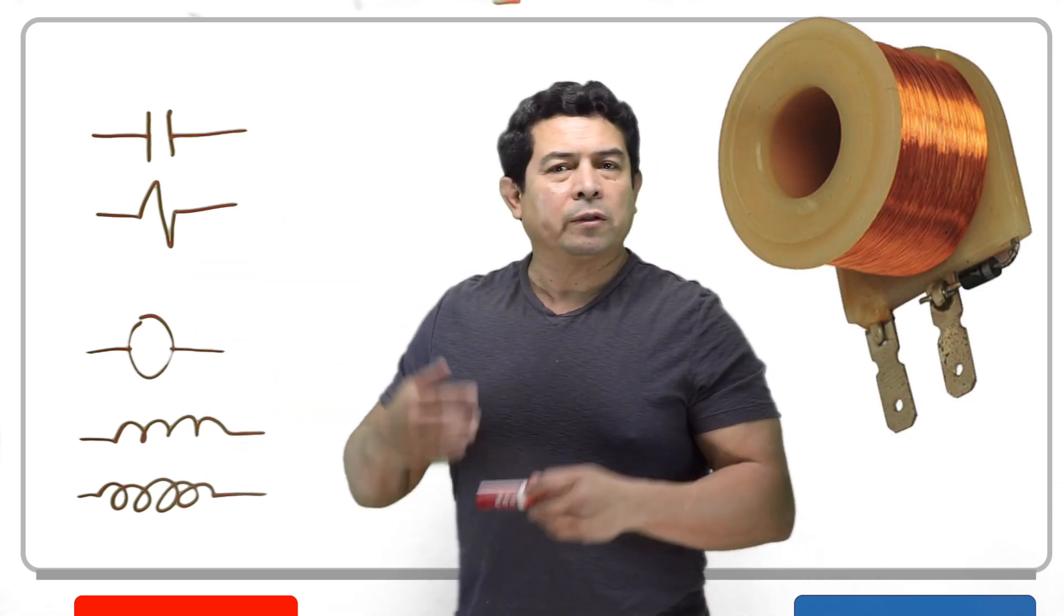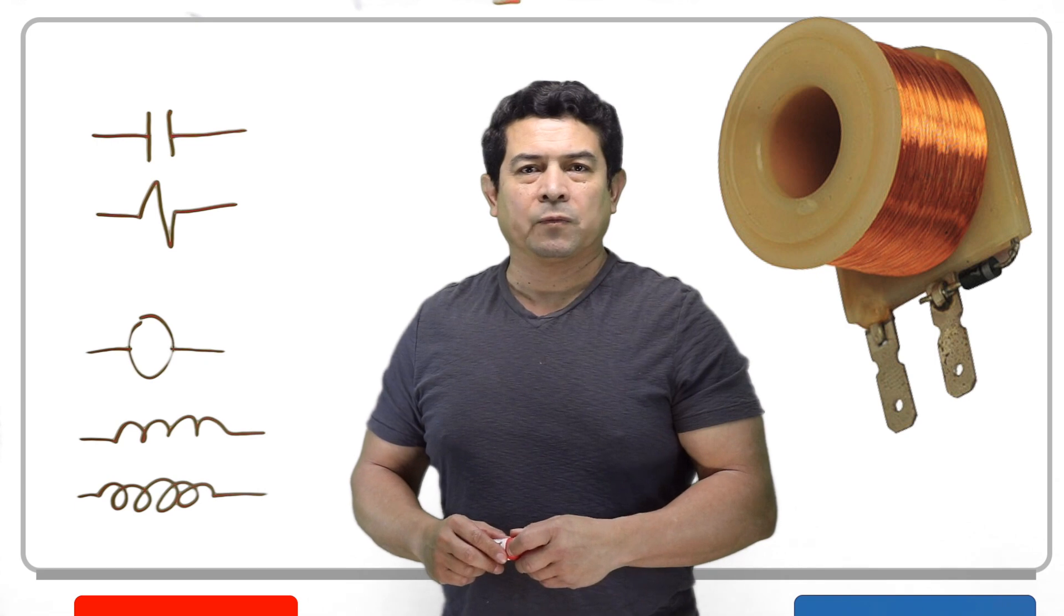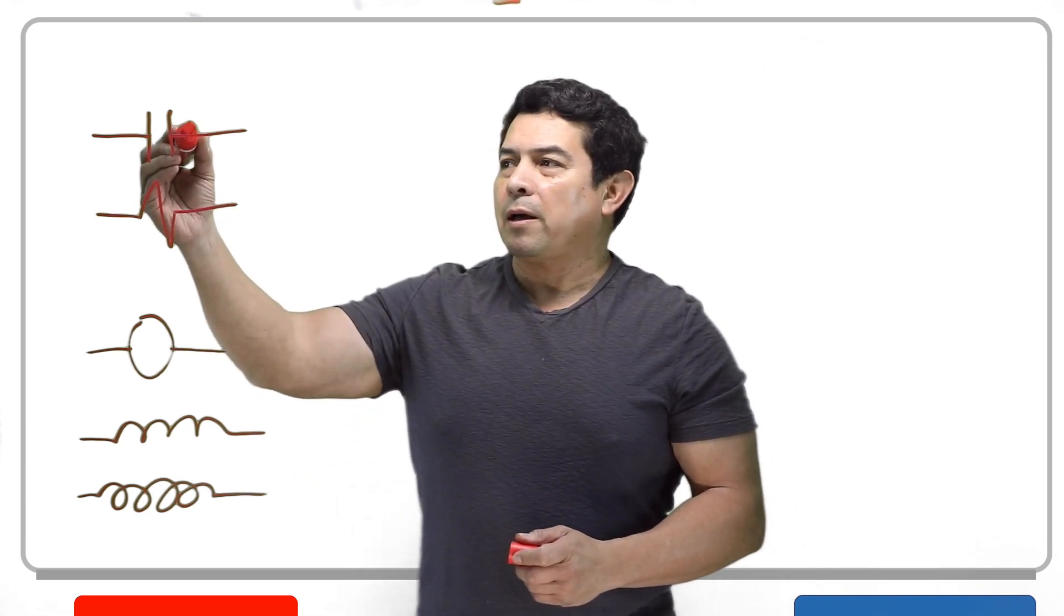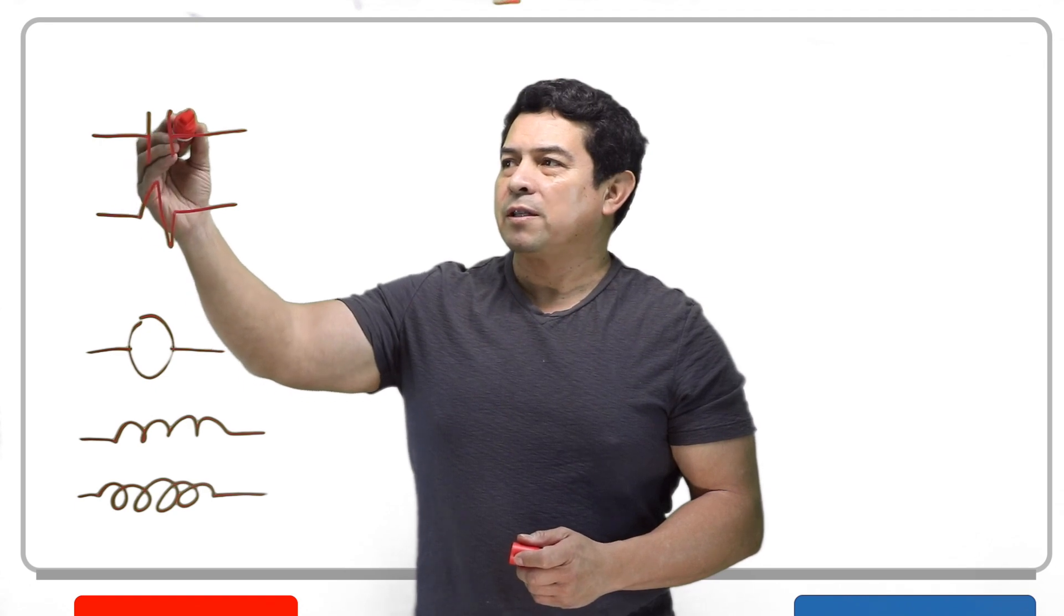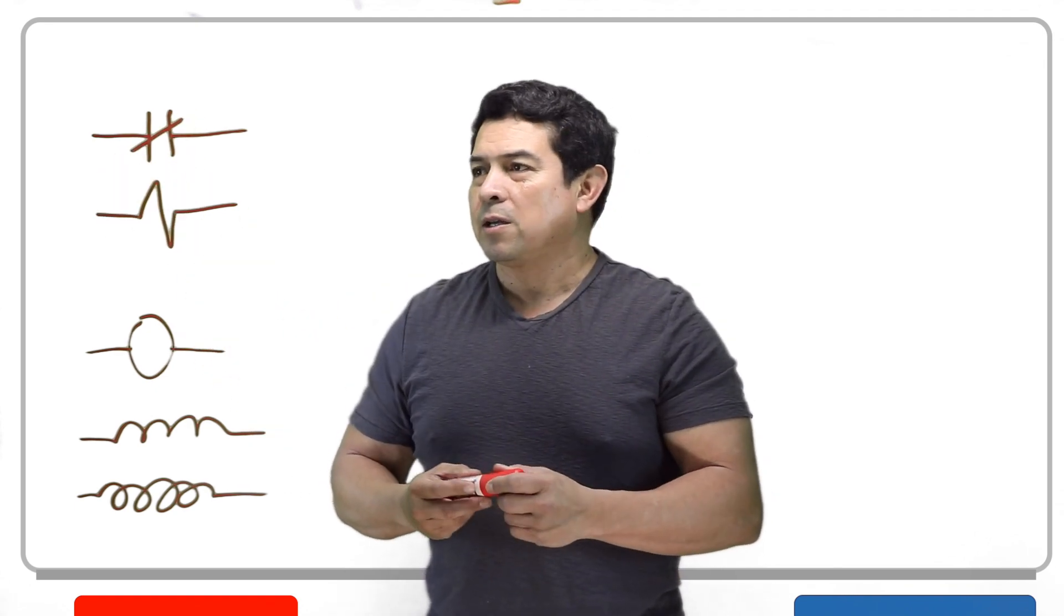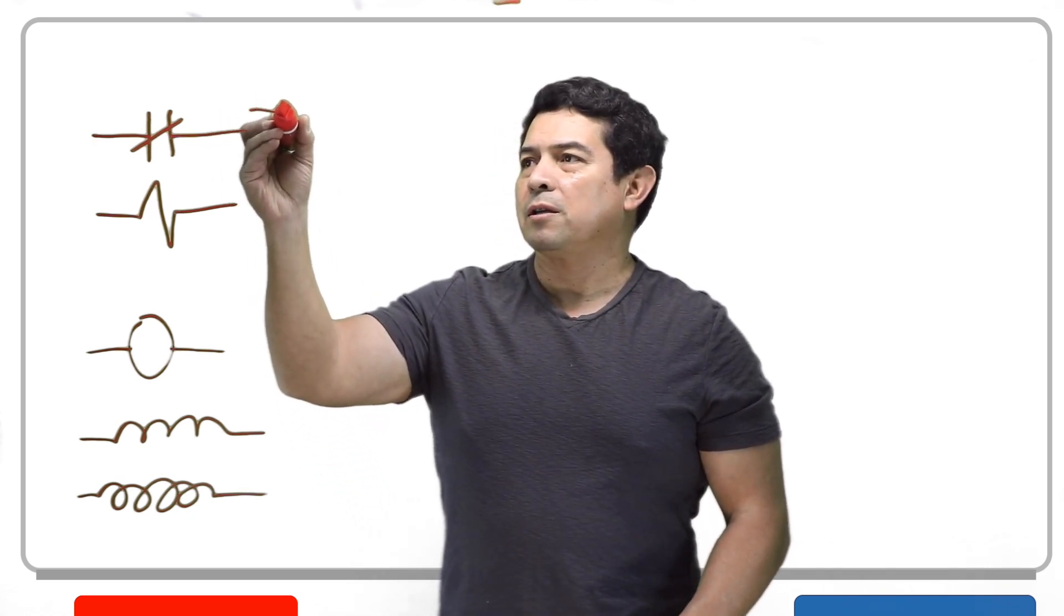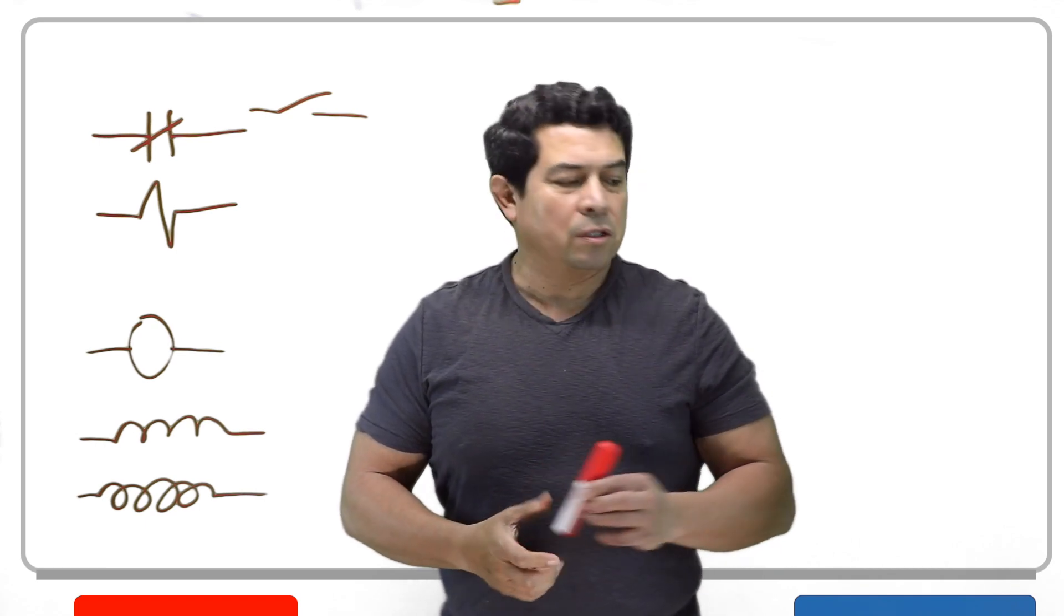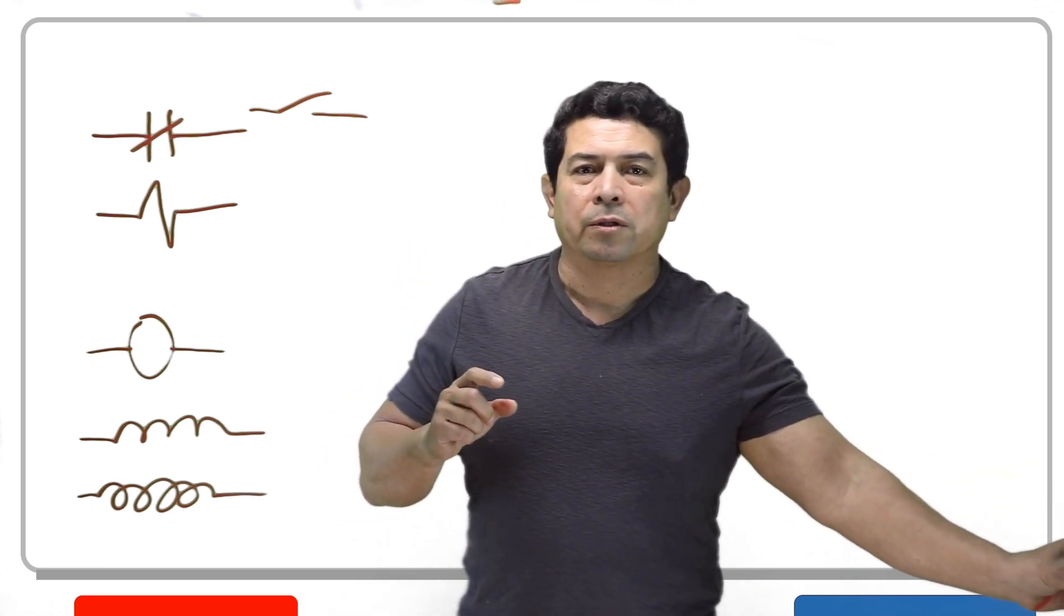But the purpose of the coil is to generate a magnetic field. When it generates a magnetic field, it's going to apply that magnetic field to this and it's actually going to close the contacts. So basically all that this is is just a switch that's going to open and close.